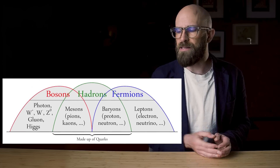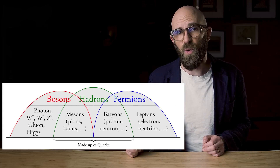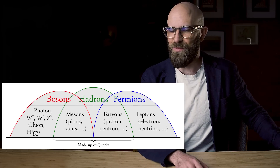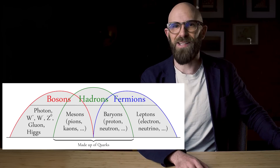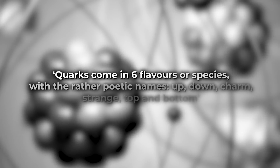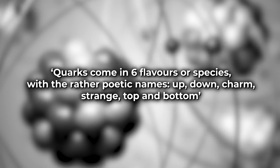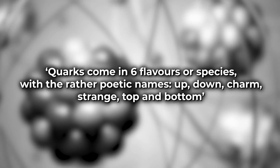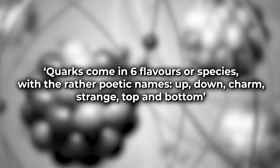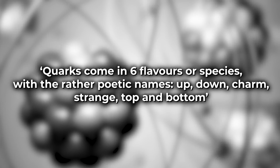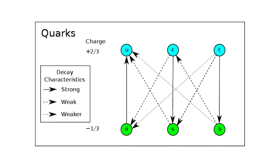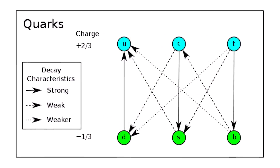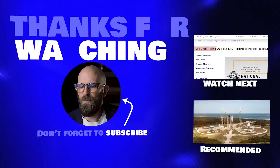Quarks belong to one of two fundamental building blocks in our universe: bosons, which comprise photons, and fermions, which include electrons and quarks. Quarks are not all equal — according to Swinburne University's Encyclopedia of Astronomy, quarks come in six flavors or species with the rather poetic names: up, down, charm, strange, top, and bottom. What really matters to us is that quark stars are stars consisting of free quarks.